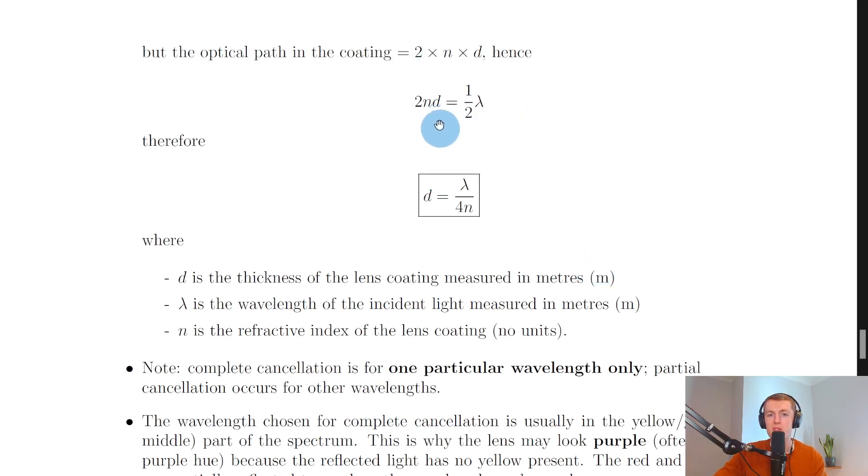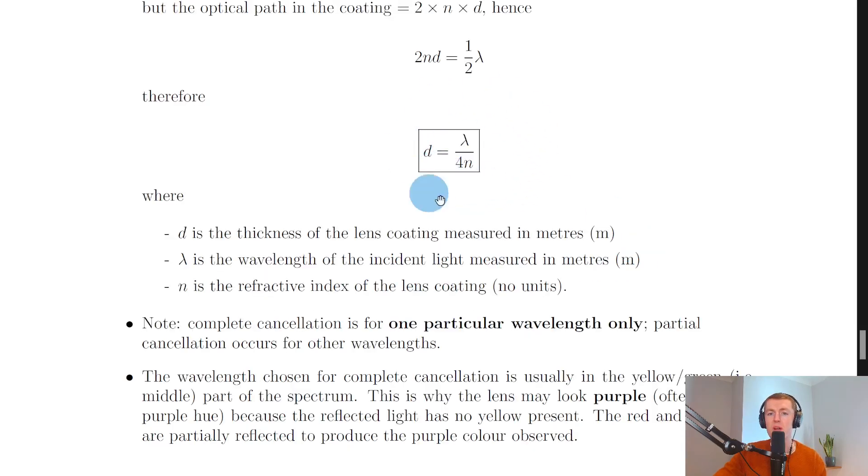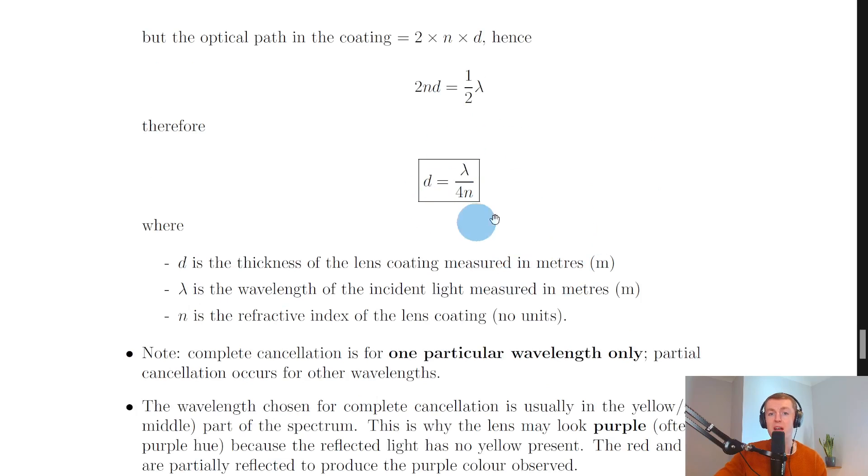And therefore, if we rearrange for the thickness coating d, we can divide both sides by 2n to get d equals λ over 4n, where we've just got this four term because we've divided the half by two. So this is our important equation that we've just derived. And d, it says, is the thickness of the lens coating measured in meters. λ is the wavelength of the incident light measured in meters. And n is the refractive index of the lens coating with no units. And you need to be able to derive this equation for the advanced higher physics exam, but you will see it on the relationship sheet as well.